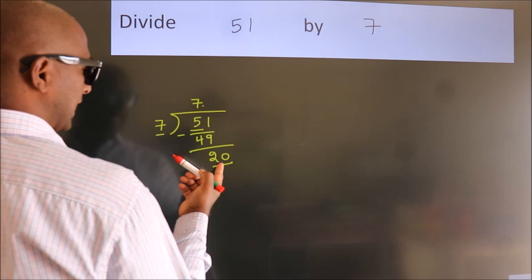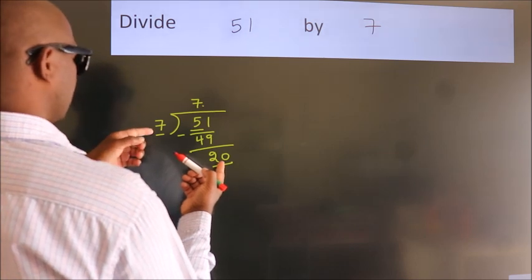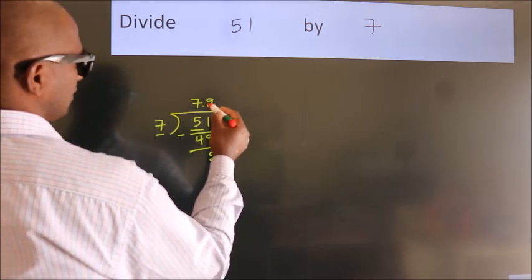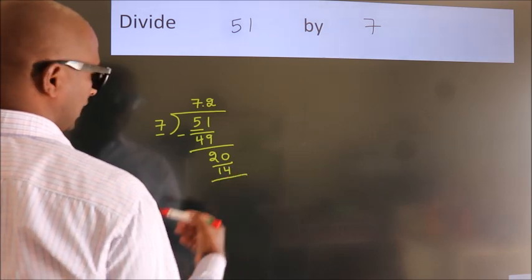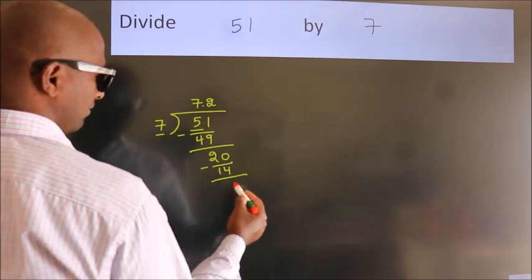A number close to 20 in 7 table is 7 twos 14. Now we subtract. We get 6.